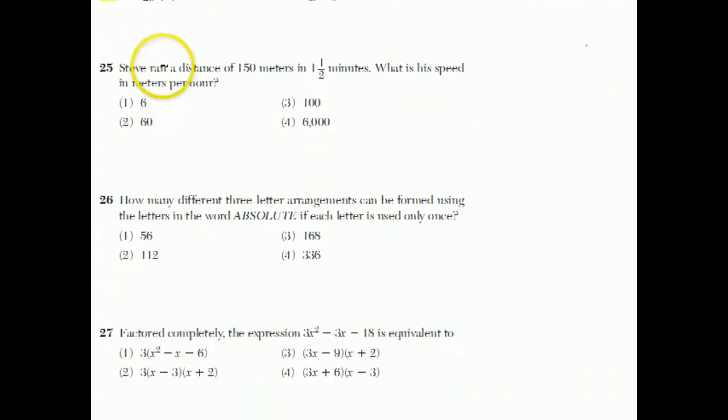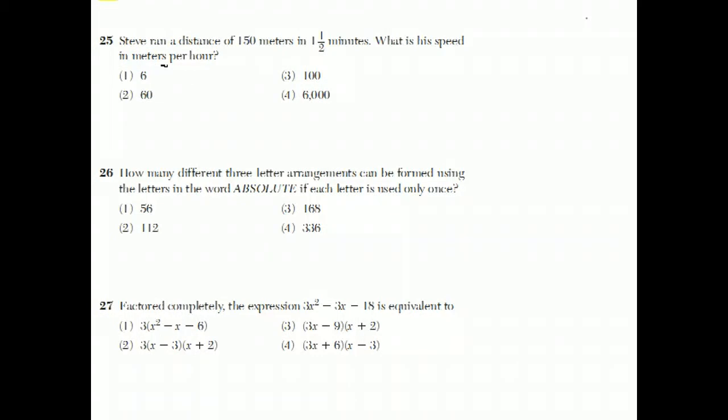Question 25. Steve ran a distance of 150 meters in 1 and a half minutes. What is his speed in meters per hour? Well, I would do this one as some kind of a ratio. So, we have meters and minutes are my two things that I'm relating. And we have our fact from the question that he goes 150 meters in 1 and a half minutes. Then the question is, how many meters does he run with his speed in meters per hour? Well, meters per hour is how many meters would I run if I ran for just one hour, which is 60 minutes.